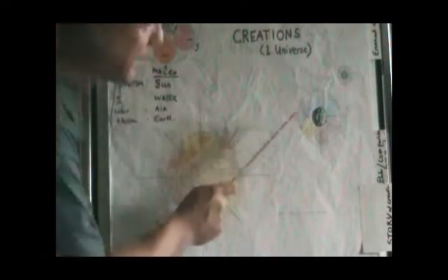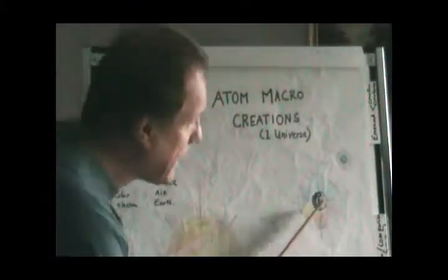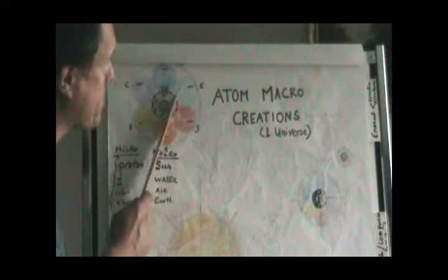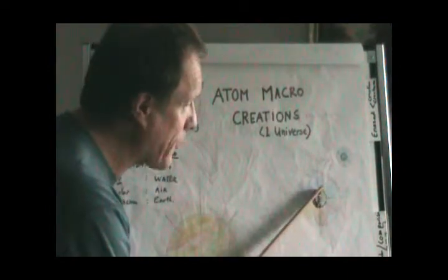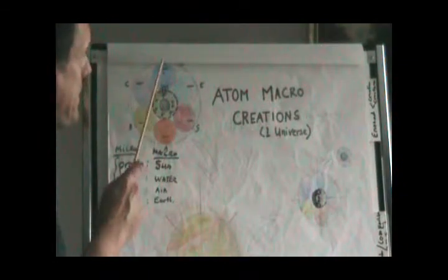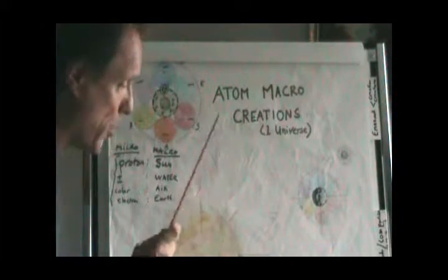If I relate that quickly to the atom, the sun is related to the proton. The air around the planet is related to the light that you see around the H1 atom. The water, which flows, is related to the plus and minus because energy flows. The earth in the planet earth is related to the electron, which is right on top here. Earth and the electron because they are both solids.